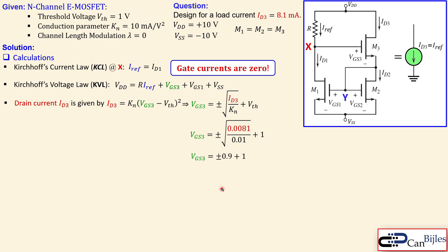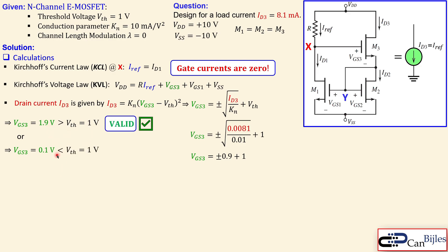Substituting values — ID3 = 0.0081 divided by 0.01 (10 mA/V²) — we get two solutions: positive 0.9 plus 1 gives 1.9 volts, and negative 0.9 plus 1 gives 0.1 volts. The 1.9V solution exceeds the threshold voltage, satisfying the saturation condition, so it is valid. The 0.1V solution is below threshold and is therefore invalid. Thus VGS3 = 1.9 volts.